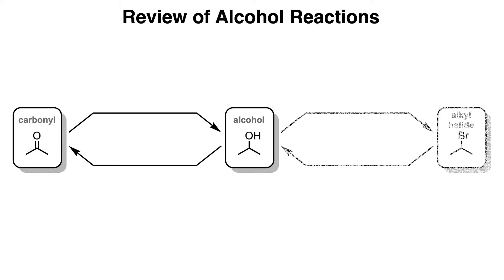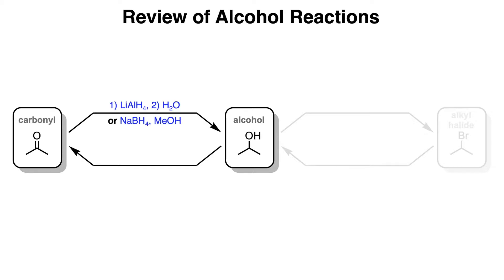To go from a carbonyl to an alcohol, you can use a reducing reagent such as lithium aluminum hydride or sodium borohydride. But to go in the reverse, from alcohol to carbonyl, you can use an oxidizing reagent like Jones Reagent, PCC, DMP, or perform a Swern oxidation.